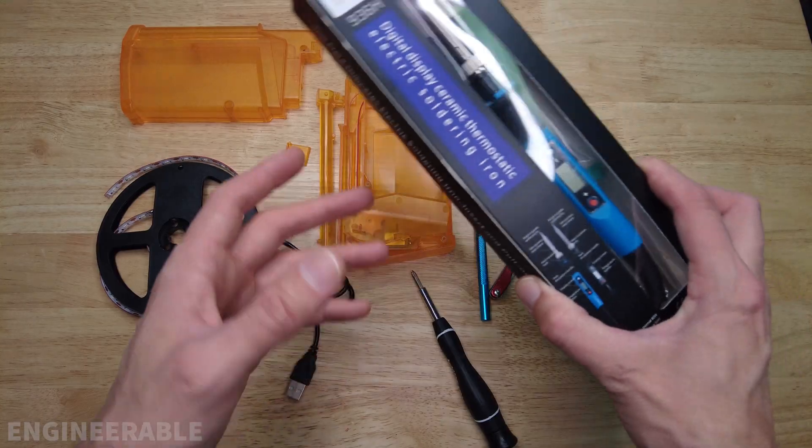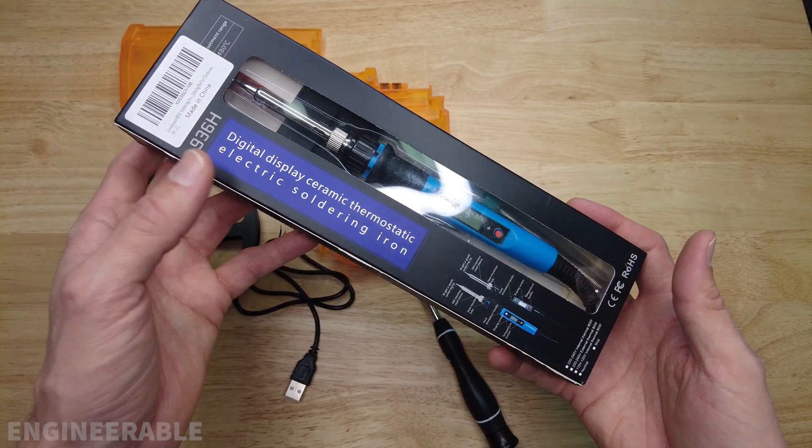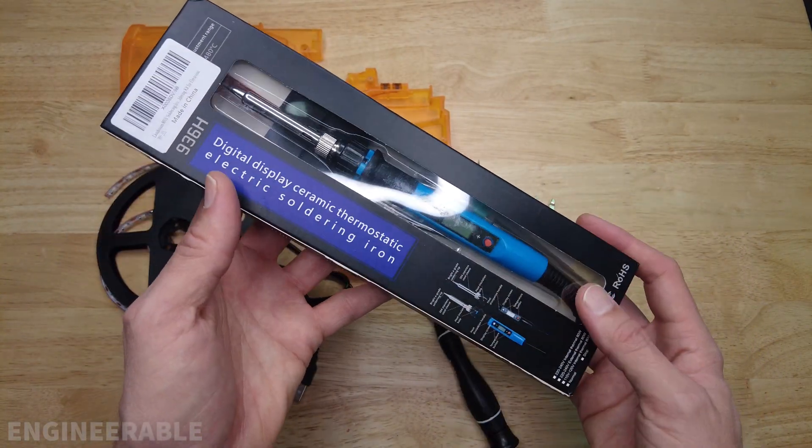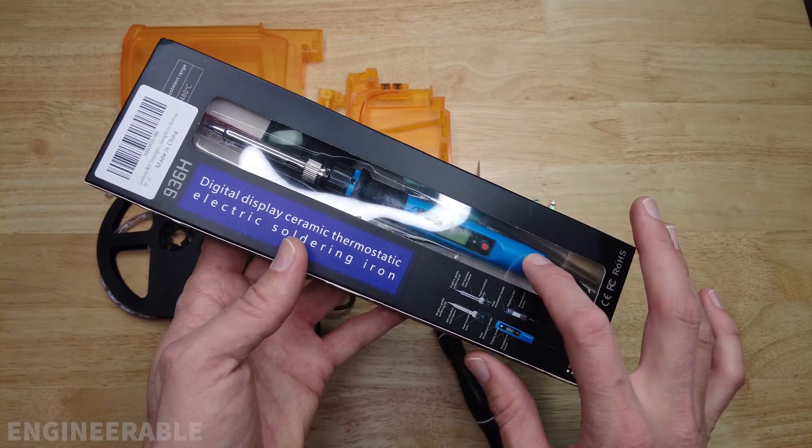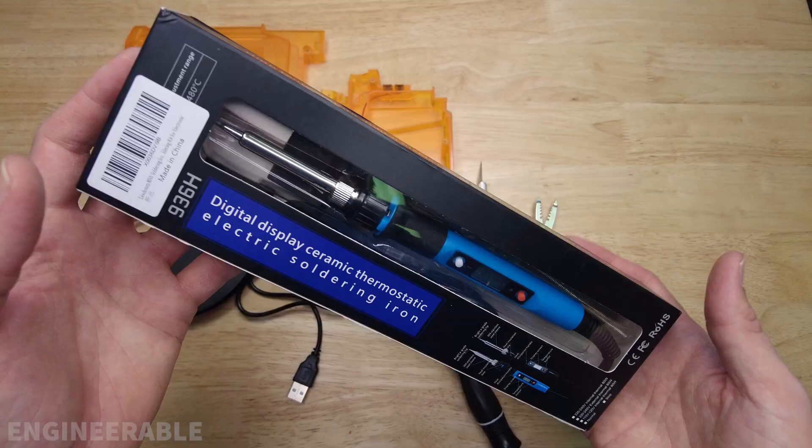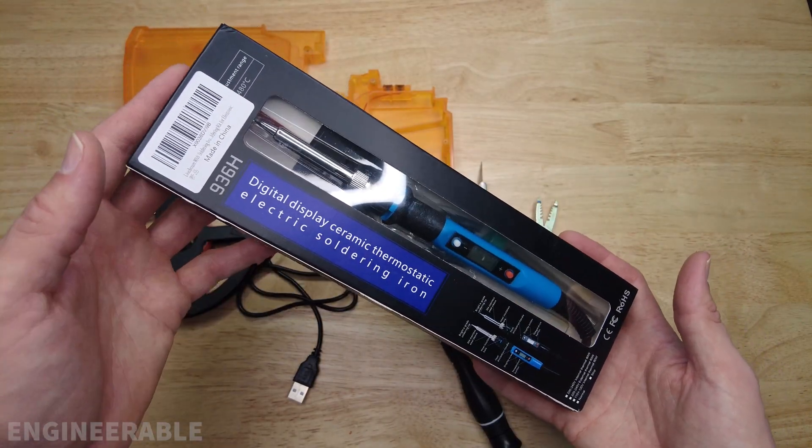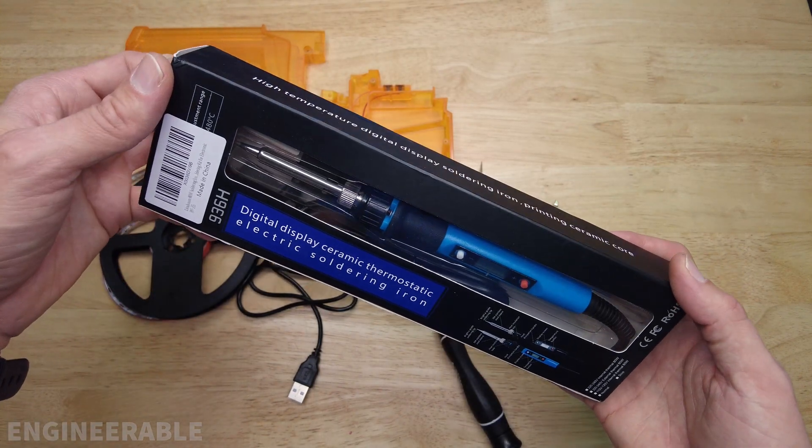If you just want an inexpensive soldering iron to do these gel blaster mods, pick up this 12 to 14 dollar soldering iron that has digital temperature control, pretty decent. I'm going to be unboxing and testing it out to see if it's good enough for these mods.